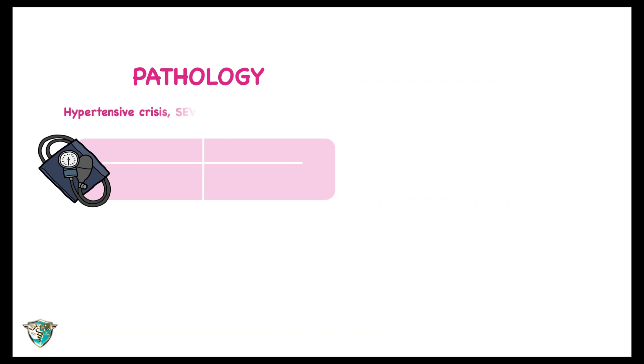Hypertensive crisis is a severe and abrupt elevation in blood pressure, with a systolic BP above 180 mmHg and a diastolic BP above 120 mmHg.